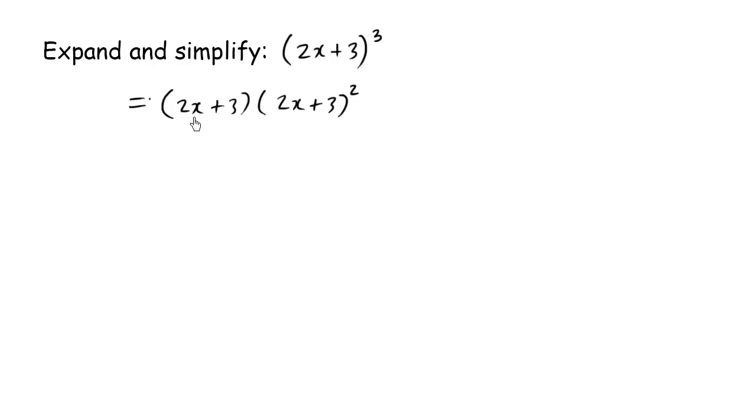So we know that this is the same thing as this, and based off that I'm going to write this as 2x plus 3 times 2x plus 3 squared. I know FOIL, so we can come up with the answer right away.